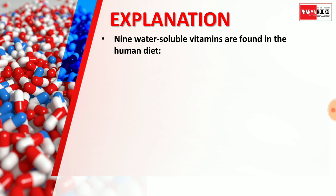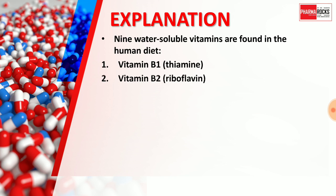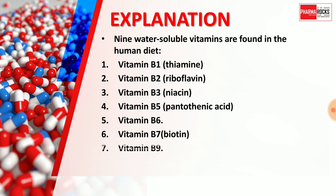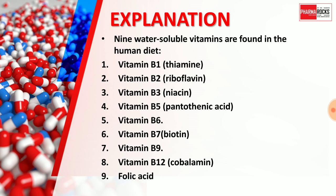The 9 water-soluble vitamins are: Vitamin B1 (thiamine), Vitamin B2 (riboflavin), Vitamin B3 (niacin), Vitamin B5 (pantothenic acid), Vitamin B6, Vitamin B7 (biotin), Vitamin B9, Vitamin B12, and Vitamin C (ascorbic acid). Vitamin B complex and Vitamin C are examples of water-soluble vitamins, while Vitamins A, D, E, and K are fat-soluble vitamins.